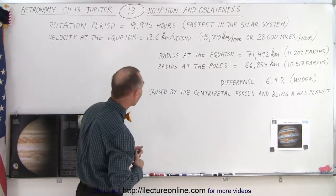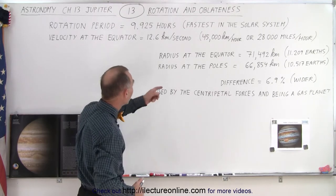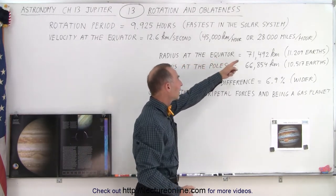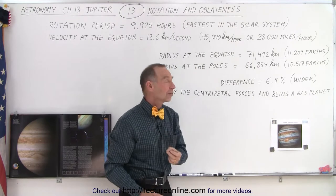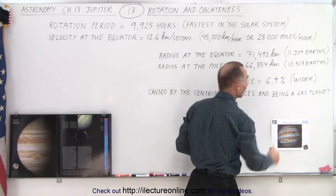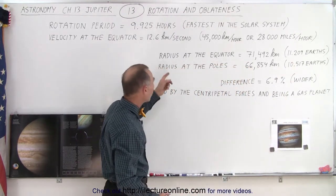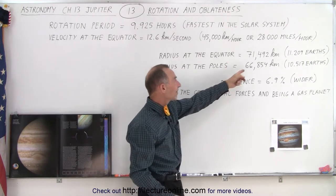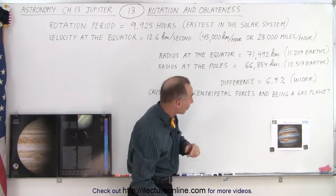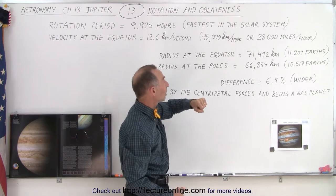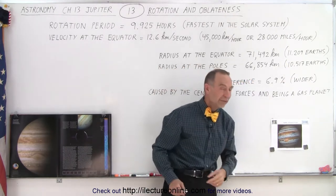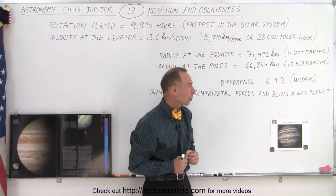If we then look at the size of the planet, the radius at the equator is over 71,000 kilometers, which is over 11 Earths, about 11.2 Earths. And the radius at the poles is less than 67,000 kilometers, which is about 10.5 Earths. So there's an enormous difference between the two.